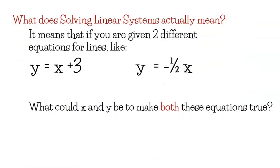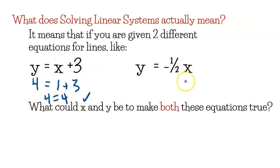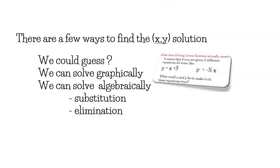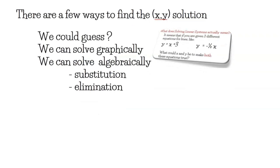So what does solving linear systems actually mean? It means that if you're given two different equations for lines, what could x and y be to make both of these equations true? For instance, if x was 1 and y was 4, this equation would be true. But for the second equation, 4 does not equal negative 1.5, so that's not a good solution. We're looking for an x, y that makes both equations true. We could guess, but don't use that method — it's terrible.